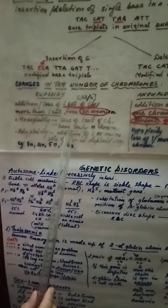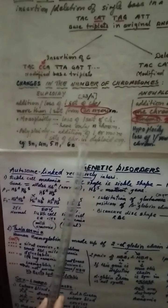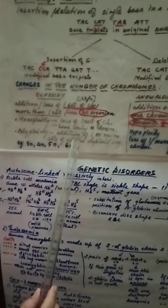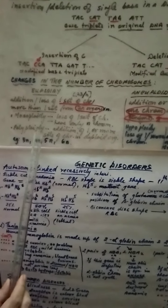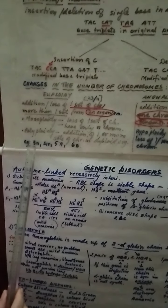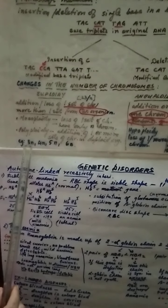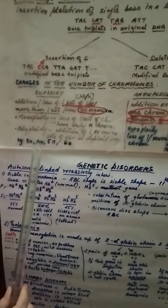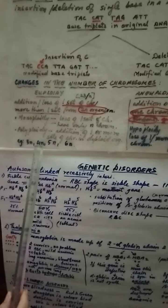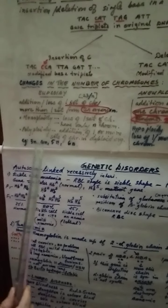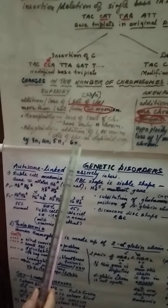Suppose there is an addition of one or more sets of chromosome in a diploid organism. Then such a condition is called polyploidy. Suppose in a 2N diploid condition, one N is added, it becomes 3N. In 2N, suppose two sets are added, it becomes 4N and so on. So this is called triploidy, tetraploidy, pentaploidy, hexaploidy.